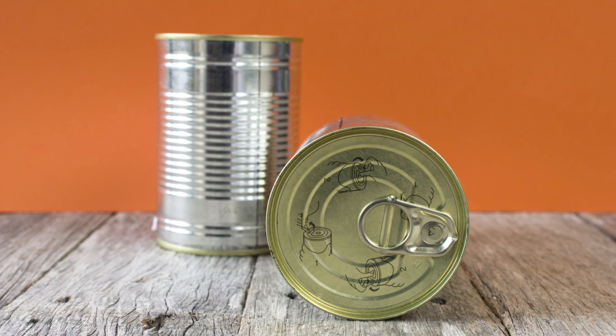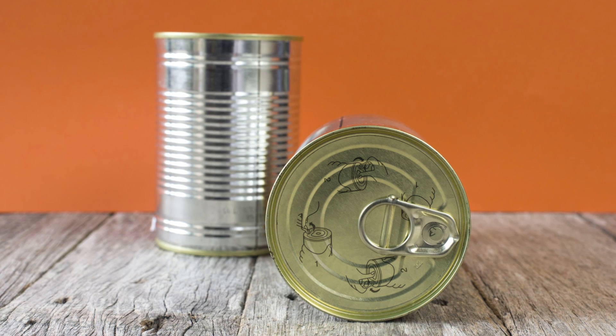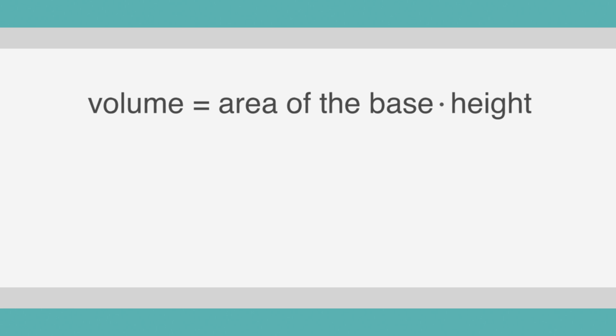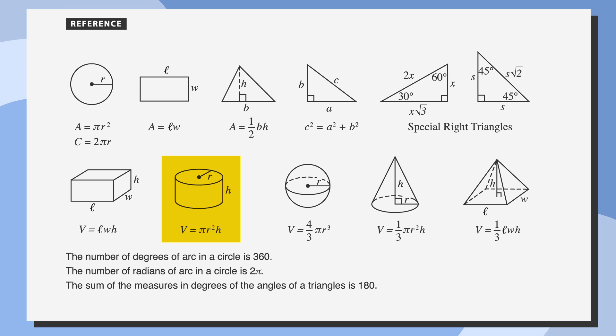The simplest type of question for cylinders on the SAT will ask for the volume. The equation for the volume of a right cylinder is volume equals area of the base times the height. Another way to express this is volume equals pi times r squared times the height. The r in this equation is the radius of the base. And good news! They give you the volume of a cylinder in the formula box at the beginning of each math section. Let's take a look at an example.